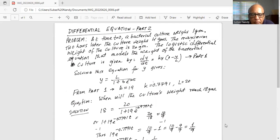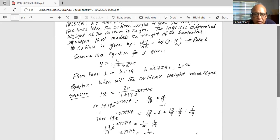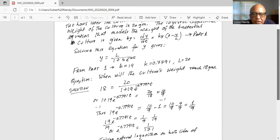For y we substitute 18 equal to 20 divided by one plus 19 multiplied by natural number raised to the power of minus 0.7791 times t. Or 1 plus 19e^(-0.7791t) equals 20 divided by 18 or 10 over 9. Therefore, 19e^(-0.7791t) equals 10 over 9 minus 1, which is 1 over 9.